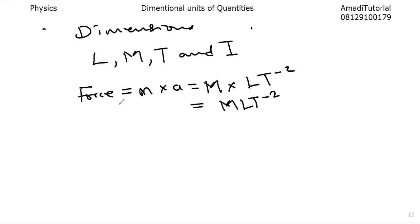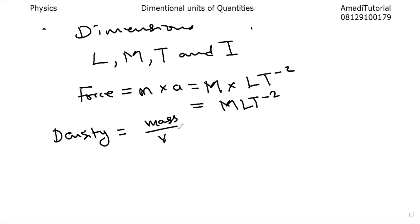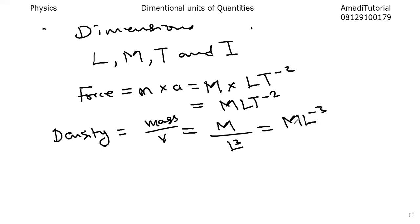What's the fundamental unit for density? Density is defined as the ratio of mass to volume. Mass in fundamental form is M — a fundamental unit. Volume in fundamental form is L raised to the power of three. So density is M times L raised to the power of minus three. This is the dimensional unit for density.